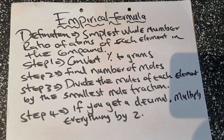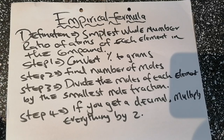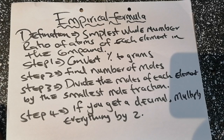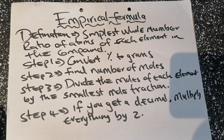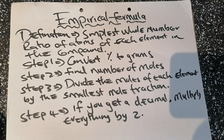Welcome to TS Tutoring. The topic of today is empirical formula. Empirical formula is the simplest whole number ratio of atoms of each element in the compound. Many students get confused in terms of finding the empirical formula of a substance.